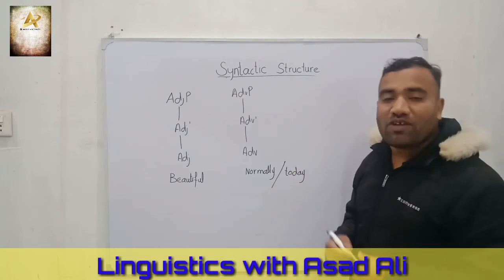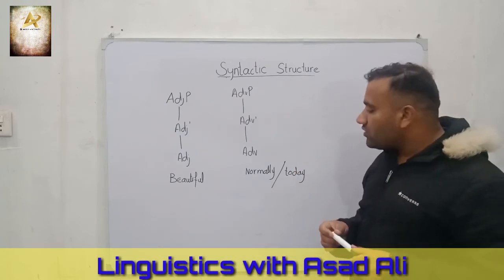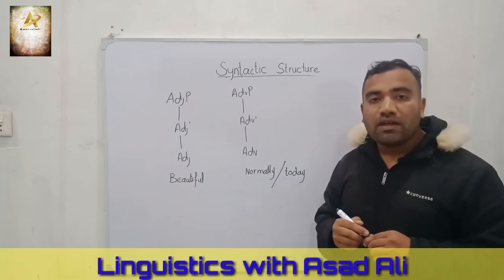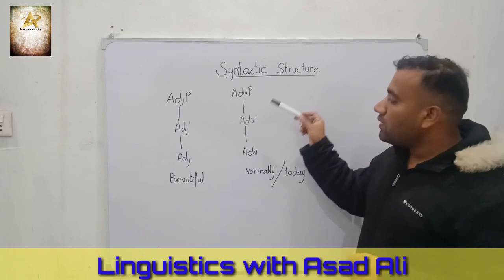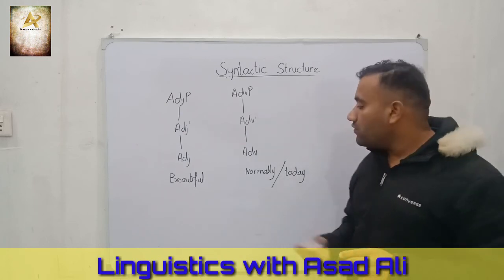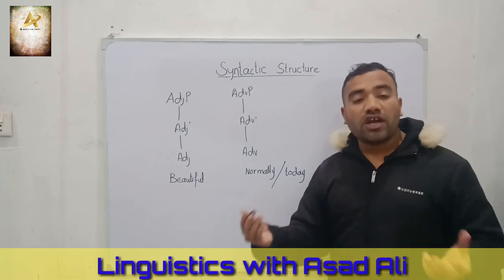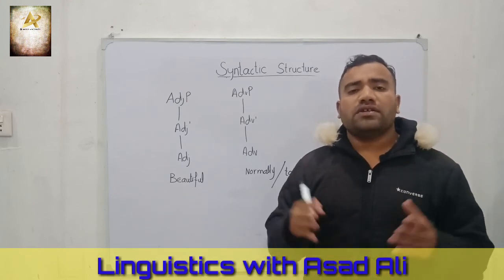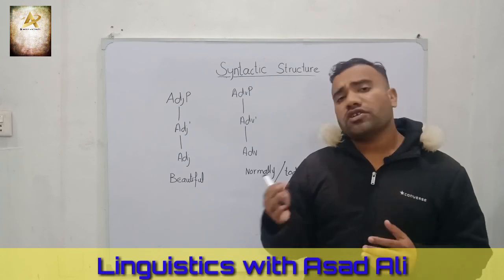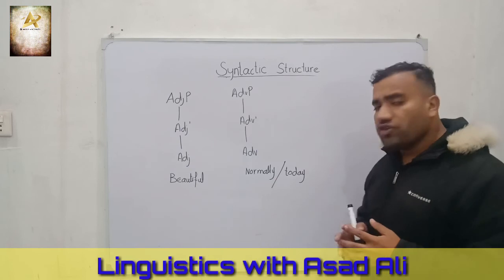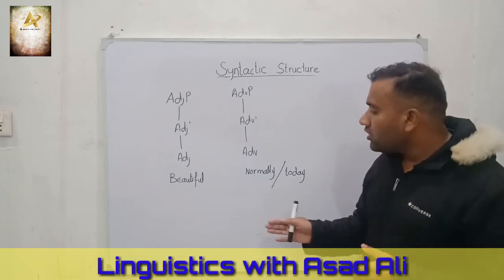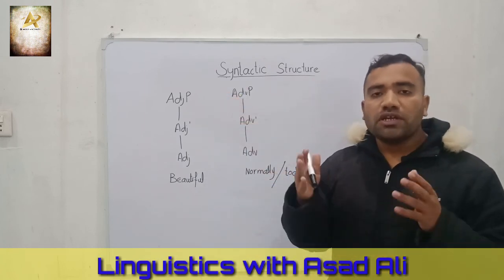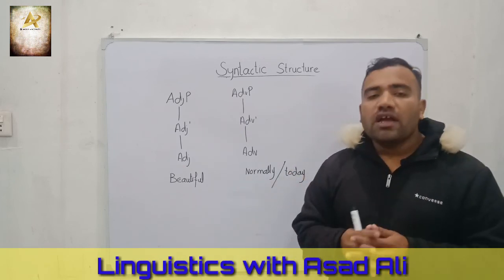The fourth is the last structure — the adverb phrase. The structure of the adverb phrase also fulfills the same levels: adverb, adverb-bar, adverb phrase. We have the word 'normally,' which is an adverb in traditional language — traditionally, a word that ends in '-ly' is called an adverb in English. Another example is 'today,' which is also an adverb. This is the structure of the adverb phrase.